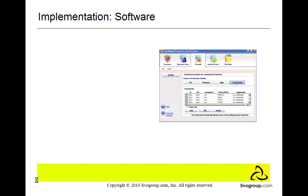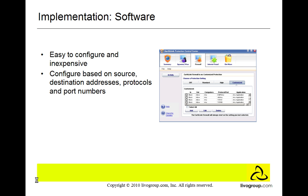Software firewalls are different from hardware firewalls in that they are easy to configure and inexpensive. You can configure the firewall based on source and destination addresses, and as you can see here in the Earthlink Protection Control Center, you can filter them based on protocols and port numbers.